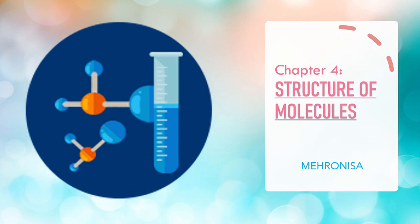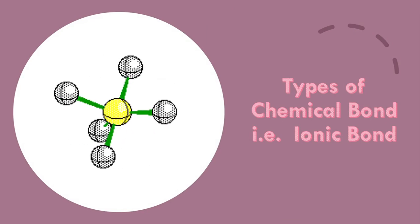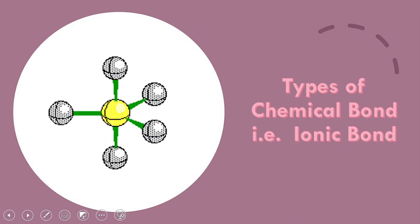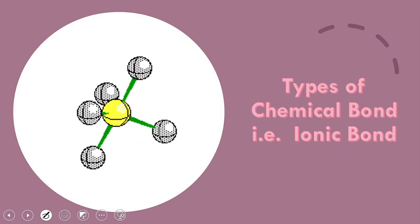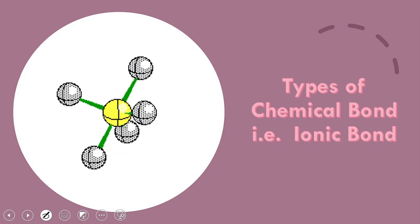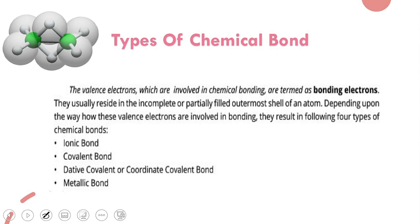Assalamu alaikum, I hope you are all well. Welcome to another class. Chapter number four: Structure of Molecules. Today we are going to study the types of chemical bonds, in which we will study about ionic bond.